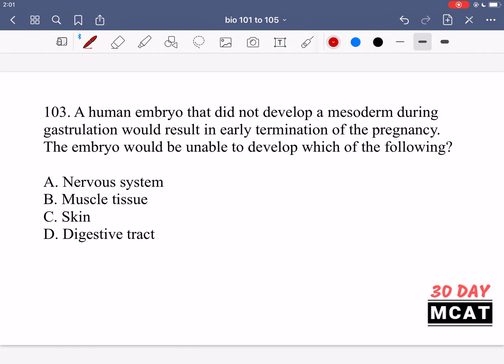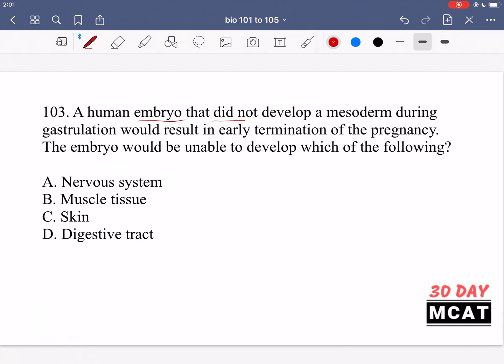In question 103, it says a human embryo that did not develop a mesoderm during gastrulation would result in early termination of the pregnancy. The embryo would be unable to form which of the following. So an embryo did not develop a mesoderm. Therefore, it's unable to develop which of the following. So first of all, we need to know what the mesoderm eventually becomes in terms of tissues in the baby that's finally born.